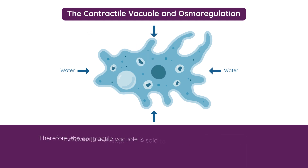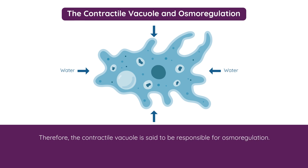The contractile vacuole is said to be responsible for osmoregulation, or maintaining water balance in the organism. Without it, the amoeba would expand and burst.